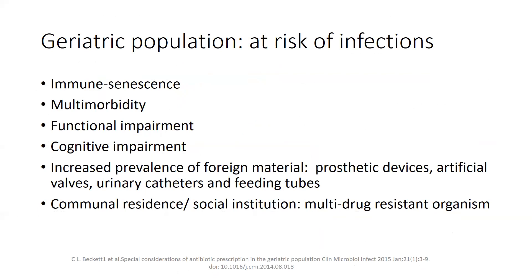Our geriatric population is at particular risk of infections as a result of a combination of factors, mainly immunosenescence, multimorbidity, functional impairment, and cognitive impairment. Many elderly patients have a high prevalence of foreign material such as prosthetic devices, artificial valves, and urinary catheters. If an elderly person is living in a communal residence or social institution, they are at higher risk of acquiring and transmitting multi-drug-resistant organisms.